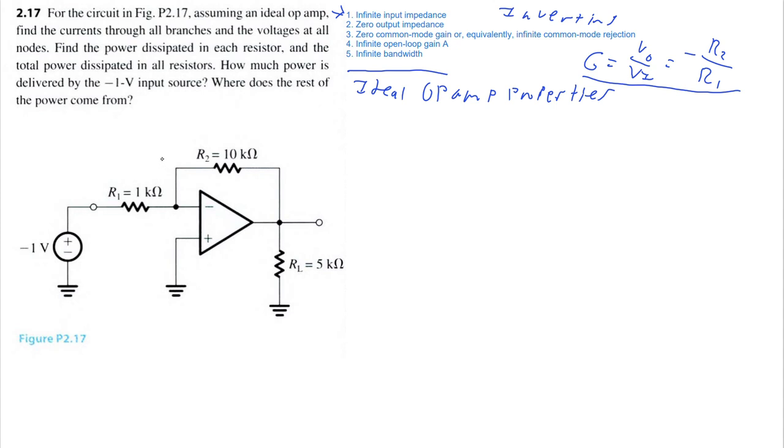Therefore, we only have one current, which we'll call I1. There is no current going through here. This says zero.